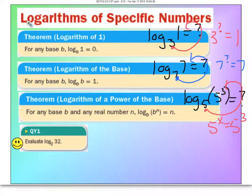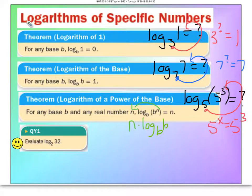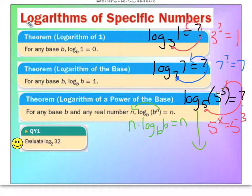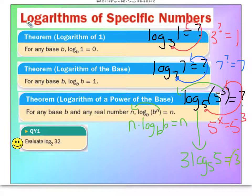We can piggyback off of this example. One of the properties of logarithms is if there's an exponent inside of a log, that exponent can come forward. That N would come forward and you'd have N times log base B of B. We know log base B of B equals 1, so it becomes N times 1, which equals N. Using our numerical example, the 3 comes forward: 3 times log base 5 of 5 equals 3 times 1, which is 3.